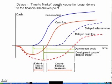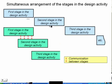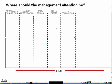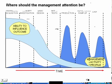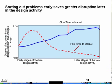Delays in time to market usually lead to longer delays before reaching the break-even point. Working through first, second, third stages of design in order means that sorting out problems early saves greater disruption later in the design activity.